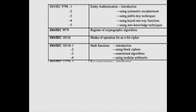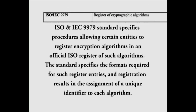ISO and IEC 9979 standard specifies procedures allowing certain entities to register encryption algorithms in an official ISO register of such algorithms. The standard specifies the formats required for such register entries, and registration results in the assignment of a unique identifier to each algorithm.